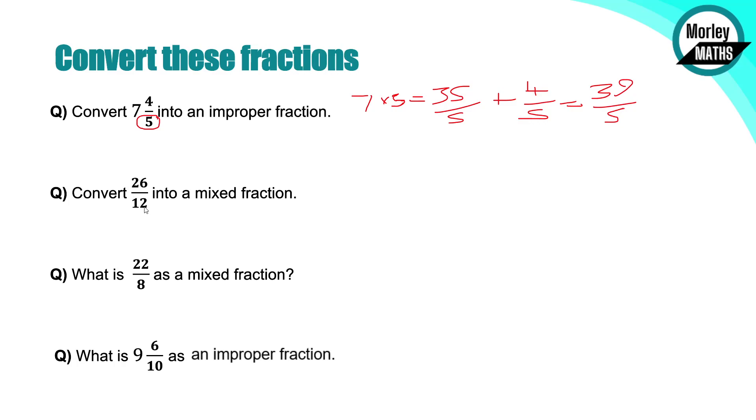Next one, we've got convert 26 out of 12 into a mixed fraction. So what we're looking at is how many 12s are there in 26. So 12, 24. We've got two 12s in 26. What have we got left if we take 24 off of 26? We've got two. So we've still got two twelfths remaining. Now that fraction we can simplify. If we halve that fraction to one sixth, we've got two and one sixth as an answer. You'll always want to simplify any fraction, even if it's part of a mixed fraction, get it down into its most basic form.